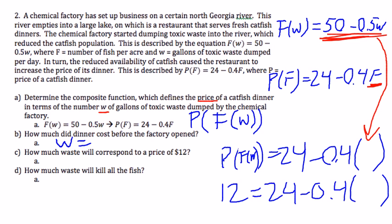And then part D says, how much waste will kill all the fish? So what does that do to our variables if we kill all the fish? F is our number of fish per acre. So if we kill all of our fish, what's the value of F? I think you could figure that out if we kill all of them.